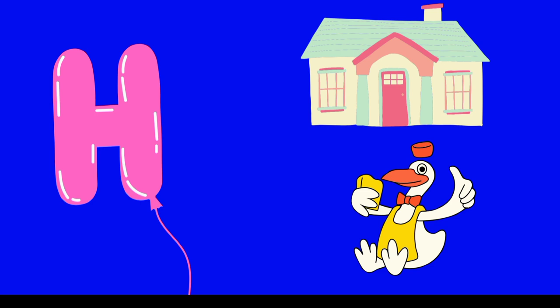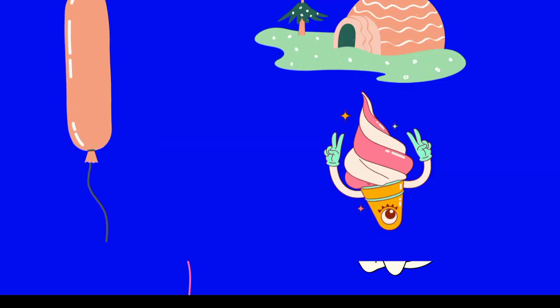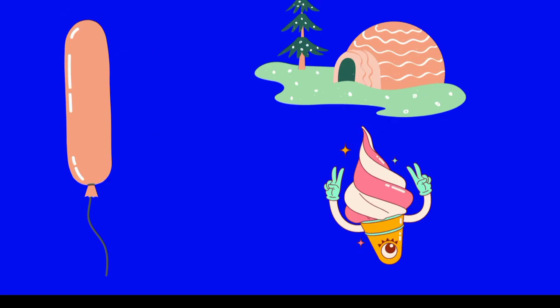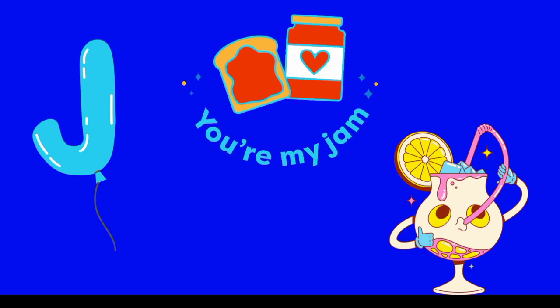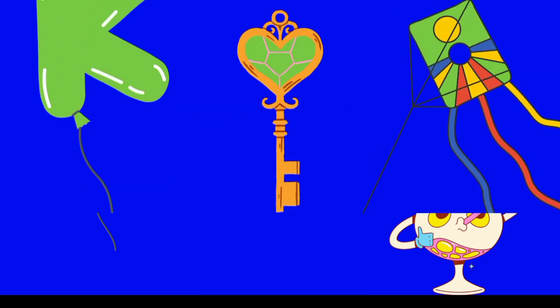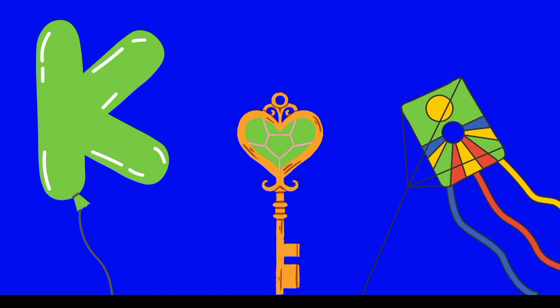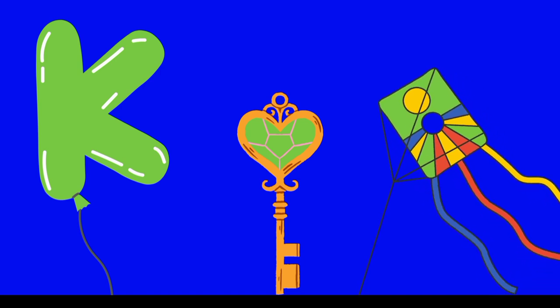H is for ham and H is for house. I is for ice cream and I is for egg yolk. J is for jam and J is for juice. K is for king and K is for kite.